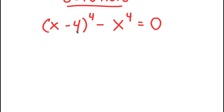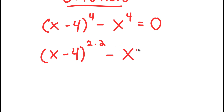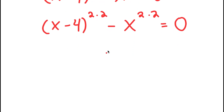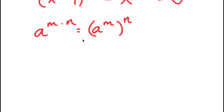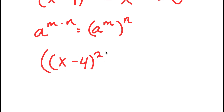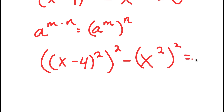From here, I can rewrite x minus 4 to the power of 4 as x minus 4 to the power of 2 times 2. And I can do the same thing with x to the power of 4, so I get x to the power of 2 times 2. If I have something in the form a to the power of m times n, this is equal to a to the power of m to the power of n. So x minus 4 to the power of 2 times 2 equals x minus 4 to the power of 2 to the power of 2, minus x to the power of 2 to the power of 2, equal to 0.